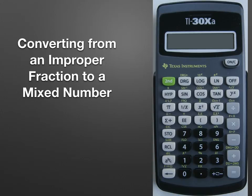Now, to convert from an improper fraction to a mixed number, we enter the improper fraction, in this case 13abc4, and we click the equal key.